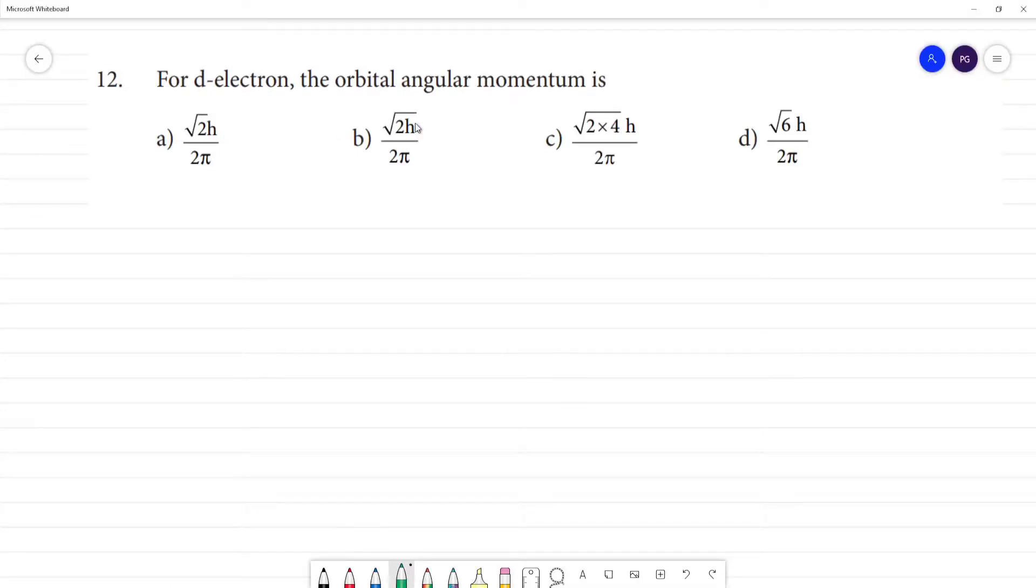For d electron, the orbital angular momentum can be calculated using the formula: square root of l into l plus 1 into h by 2 pi. This is the orbital angular momentum formula.